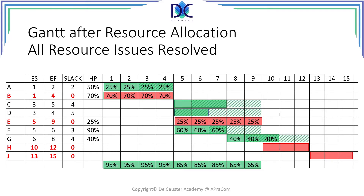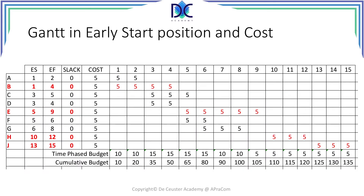You've finished the exercise. Let's have a look at my result and compare it with yours. Here is my solution — you see the time-phased budget at the bottom with all the activities in early start position, and we can find the cumulative budget at the bottom. The total budget at the end is 135 monetary units.